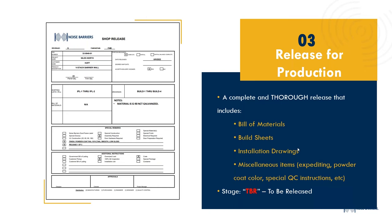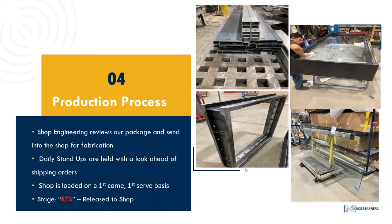Once everything is approved and all boxes are checked, the drafter has submitted drawings meeting all requirements. The order then moves into the order release function: a bill of materials is created, along with build sheets for the shop, installation drawings, and miscellaneous item details. This includes any expediting if applicable, powder coat color selection — whether primer or powder coated — and any special QC instructions, such as for one-way mirror glass or other customer-specified requirements.